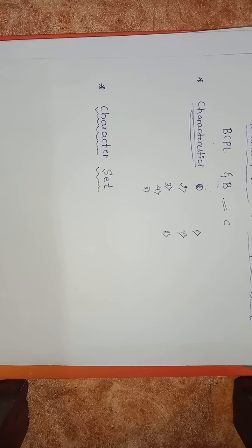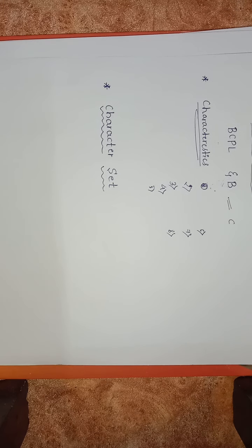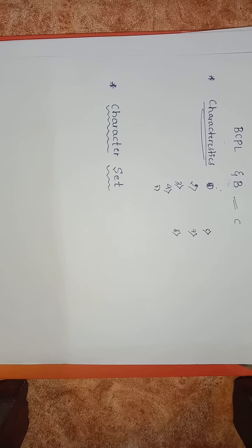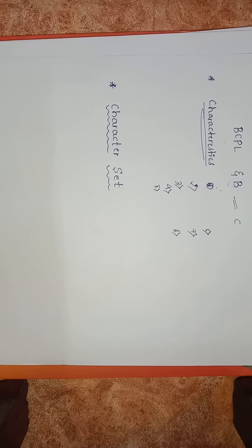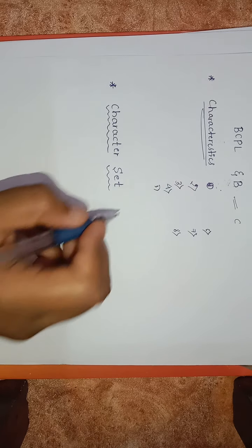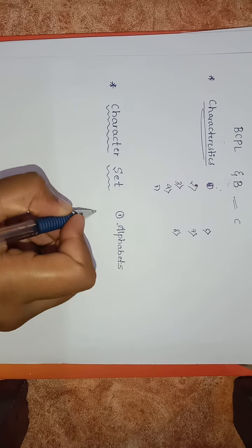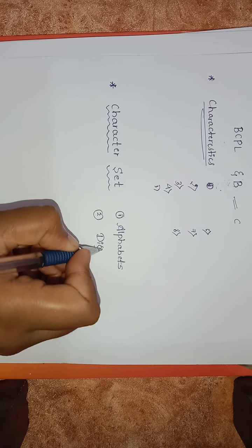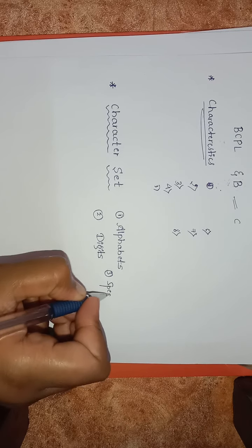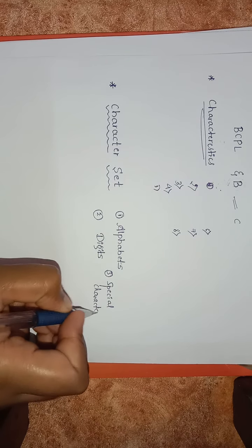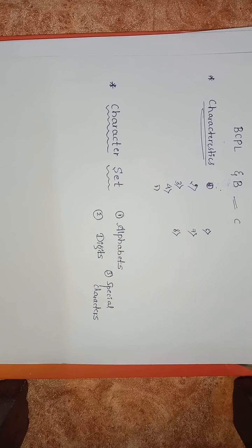In English we use characters like A, B, C and numbers like 0, 1, 2, 3. Similarly, on your computer keyboard you can observe numbers, function keys, and alphabets — all different groups of characters. In C language, the characters are grouped into three main categories: alphabets, digits, and special characters.